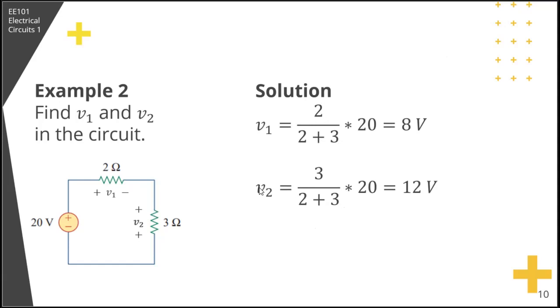V2 is equal to 3, its corresponding resistance, over 2 plus 3 times 20. So again, 20 over 5 is 4 times 3, that's 12.